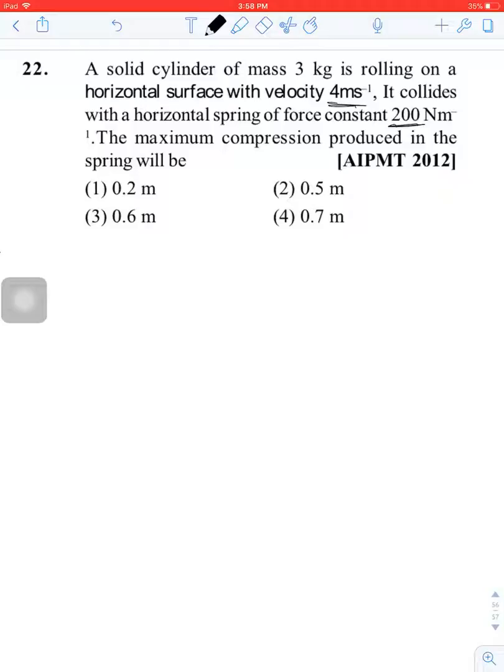The maximum compression produced in the spring will be... So, half mv squared times 1 plus k squared upon r squared equals half k x maximum squared.